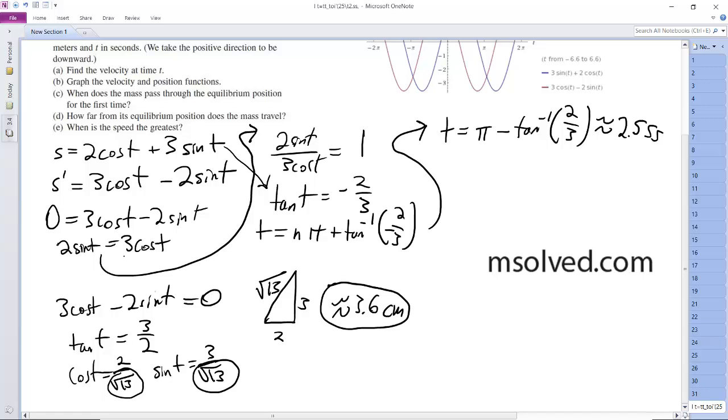All right, and then speed is greatest when the object passes the mean position, so in the middle. And that's simply just what we had before: tangent of t is equal to negative 2 thirds.